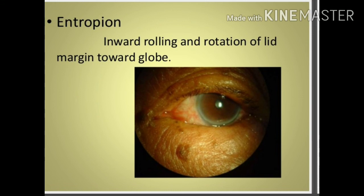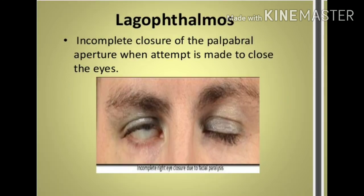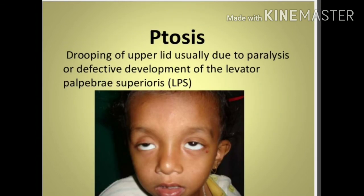Entropion is the inward rolling and rotation of the lid margin toward the globe. Ectropion is the outward rolling or outward turning of the lid margin. Lagophthalmos is incomplete closure of the palpebral aperture when an attempt is made to close the eyes. Ptosis is drooping of the upper eyelid due to paralysis or defective development of the levator palpebrae superioris; oculomotor palsy is one cause, and partial ptosis is due to paralysis of Müller's muscle as occurs in Horner's syndrome.